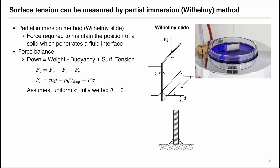Surface tension can be measured using the partial immersion method, or the Wilhelmy method. Using the Wilhelmy slide shown here, we can do a force balance where the downward force equals the gravitational force downward (mg), minus the buoyancy force of the submerged solid (rho of the fluid times g times the displaced volume), plus the surface tension force, which is the surface tension multiplied by the wetted perimeter at the interline.